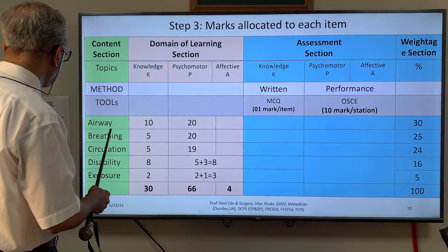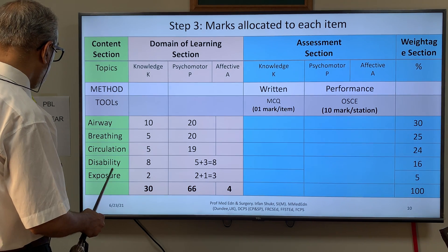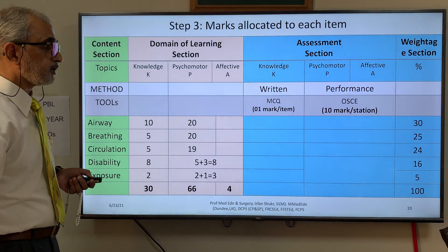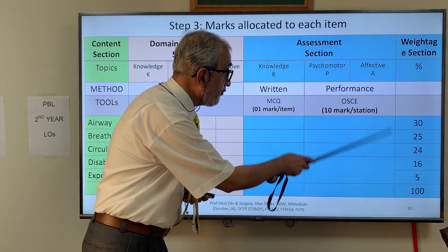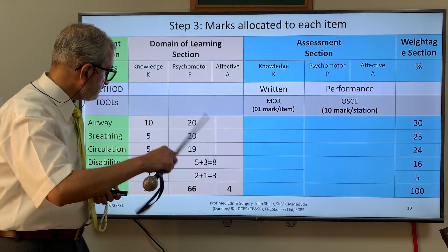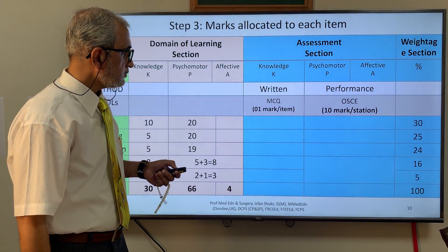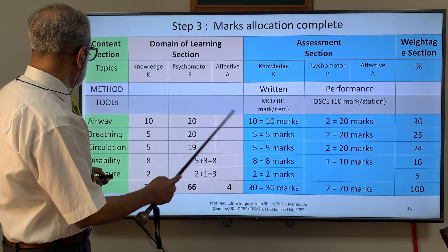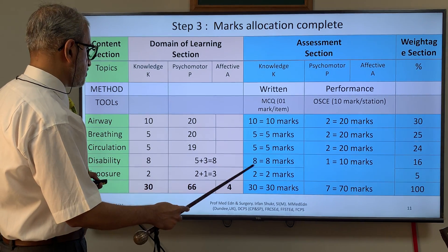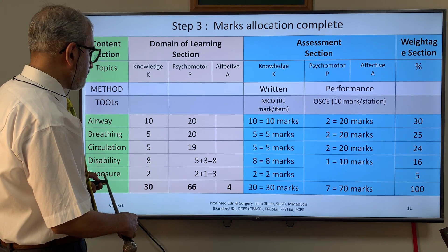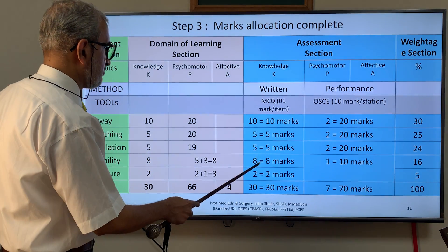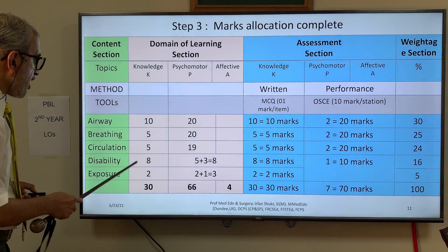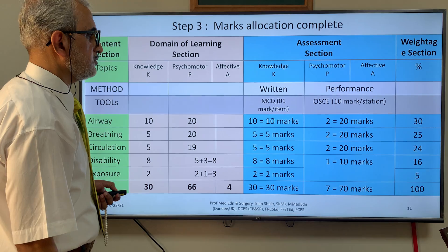With 30 MCQs, we then determine how many should come from each topic: airway, breathing, circulation, disability, and exposure. Similarly for the seven OSCE stations. The weightage determines the distribution. We concluded: 10 MCQs from airway, 5 from breathing, 5 from circulation, 8 from disability, and 2 from exposure. Although the overall weightage of disability may appear less, the MCQ count is higher because its domain of learning had more items within that domain.